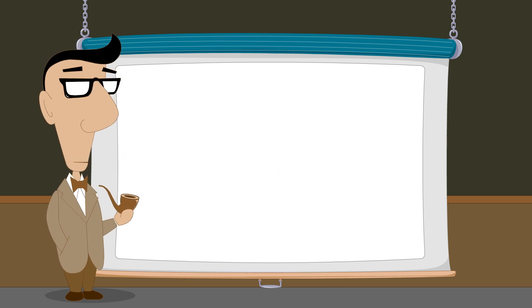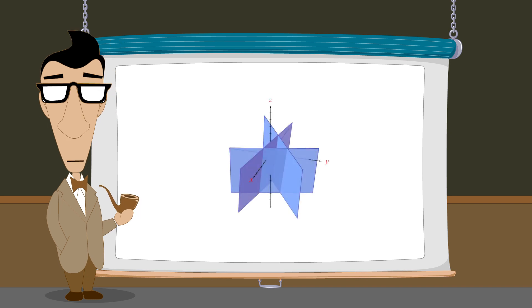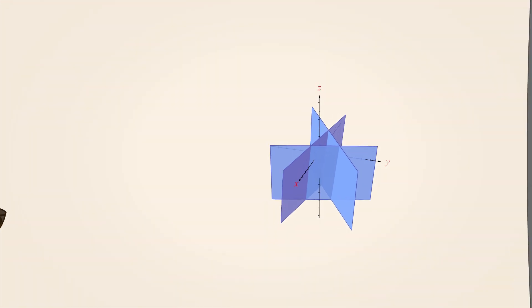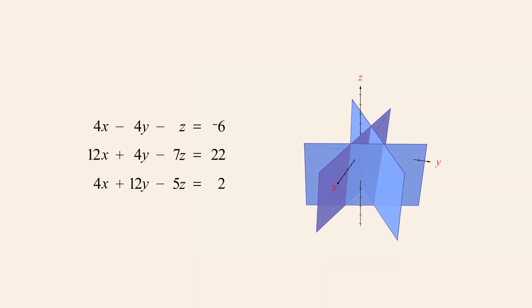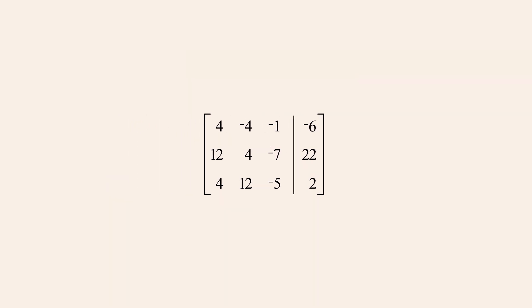Parallel planes are not the only configuration which can cause a system to be inconsistent. Three planes forming a triangular tube will also create an inconsistent system. So how do we recognize this type of system? Unfortunately, a system of equations whose graph contains a triangular tube cannot typically be spotted by simply looking at the equations. If this system is represented in matrix form and reduced through Gauss-Jordan elimination, what sort of indication of inconsistency will be produced? To find out, let's reduce this matrix.